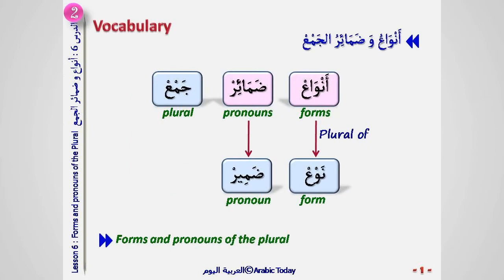Explaining the title: أنواع وضمائر الجمع. أنواع is the plural of نوع, meaning 'form.' ضمائر is the plural of ضمير, meaning 'pronoun.' جمع means 'plural,' which gives in English 'forms and pronouns of the plural.'